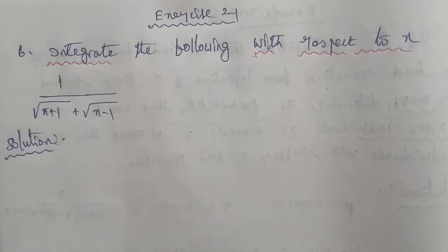Hi students, I am Gopinath. This is business math X, 2.1, question number 6. Integrate the following with respect to X. The given question is 1 by square root of X plus 1 plus square root of X minus 1.